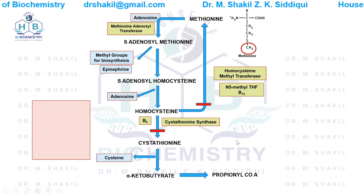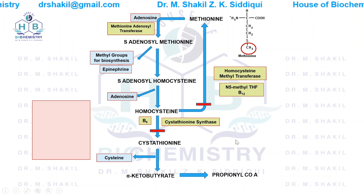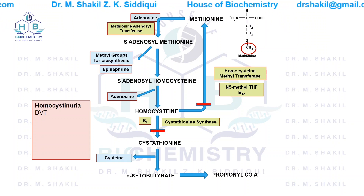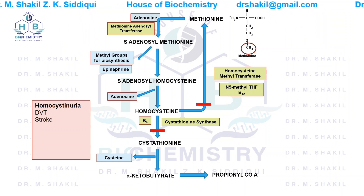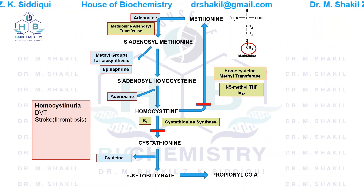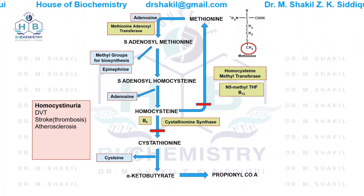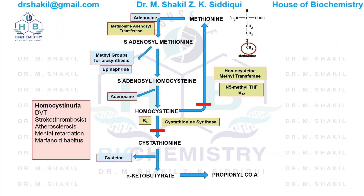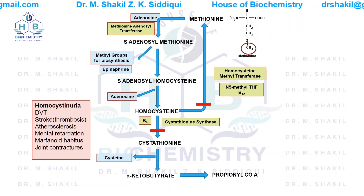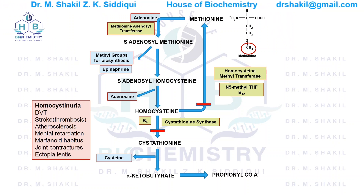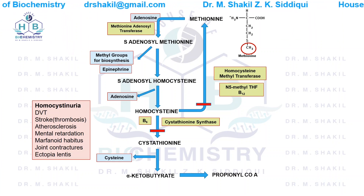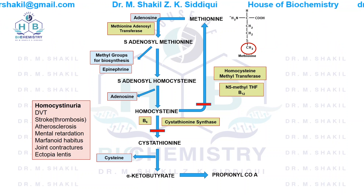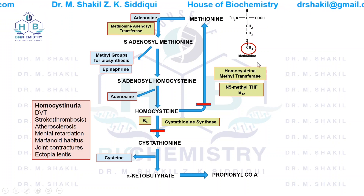The pathologies associated with homocystinuria include: deep venous thrombosis because platelets aggregate more; stroke due to thrombosis; atherosclerosis; mental retardation; Marfanoid habitus; joint contractures; and in the eye it will cause ectopia lentis. All of these problems are created because of the sulfhydryl group of homocysteine.